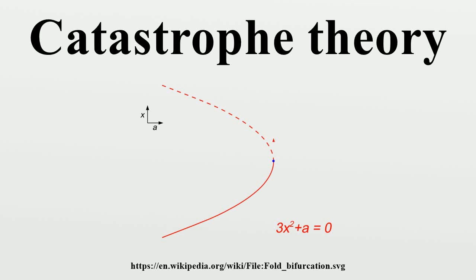In mathematics, catastrophe theory is a branch of bifurcation theory in the study of dynamical systems. It is also a particular special case of more general singularity theory in geometry.